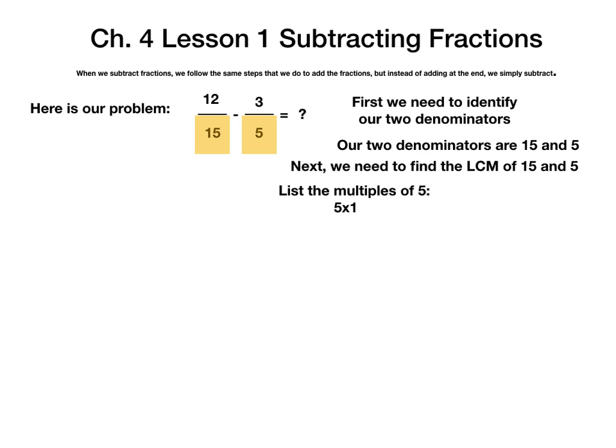List the multiples of 5: 5 times 1 is 5, 5 times 2 is 10, 5 times 3 is 15, 5 times 4 is 20. At this step, you might already be able to identify what the LCM of 5 and 15 is. If not, we are going to go ahead and do the next step.